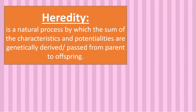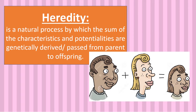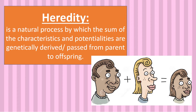Heredity is the transmission of genetic characters from parents to offspring. It is a natural process by which the sum of the characteristics and potentialities are genetically derived or passed from one generation to the next. Upon looking at the picture, you can see that the child has the characteristics of both parents. The eyes, nose, hair color, and skin complexion were derived from her father, while the lips, freckles, and hair length were derived from her mother. Therefore, the sum of the genetic characteristics of the parents are passed to the child.